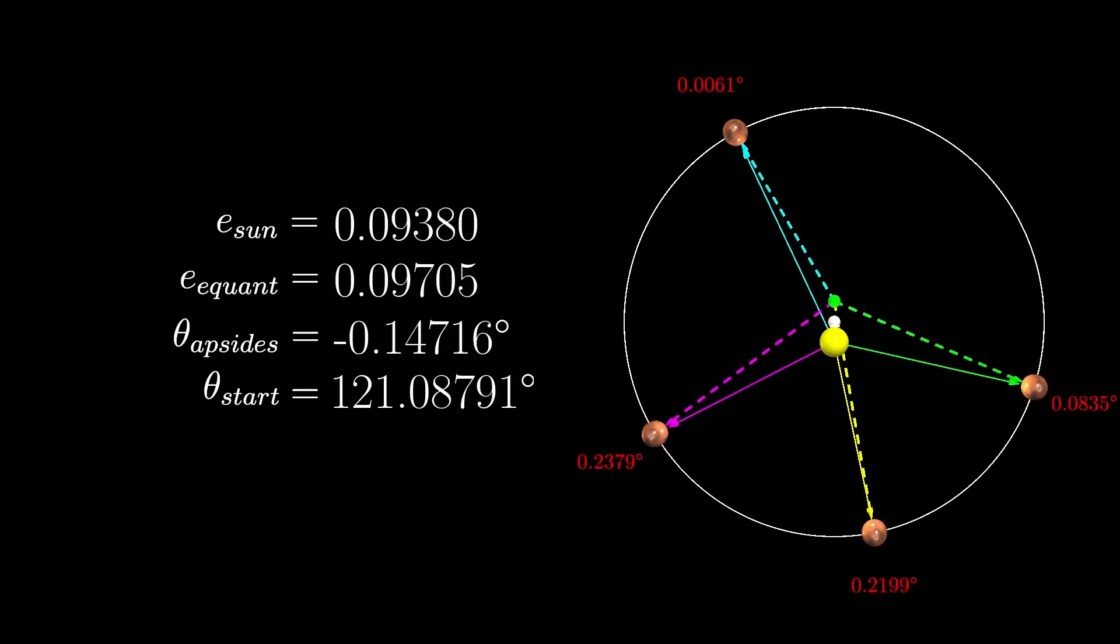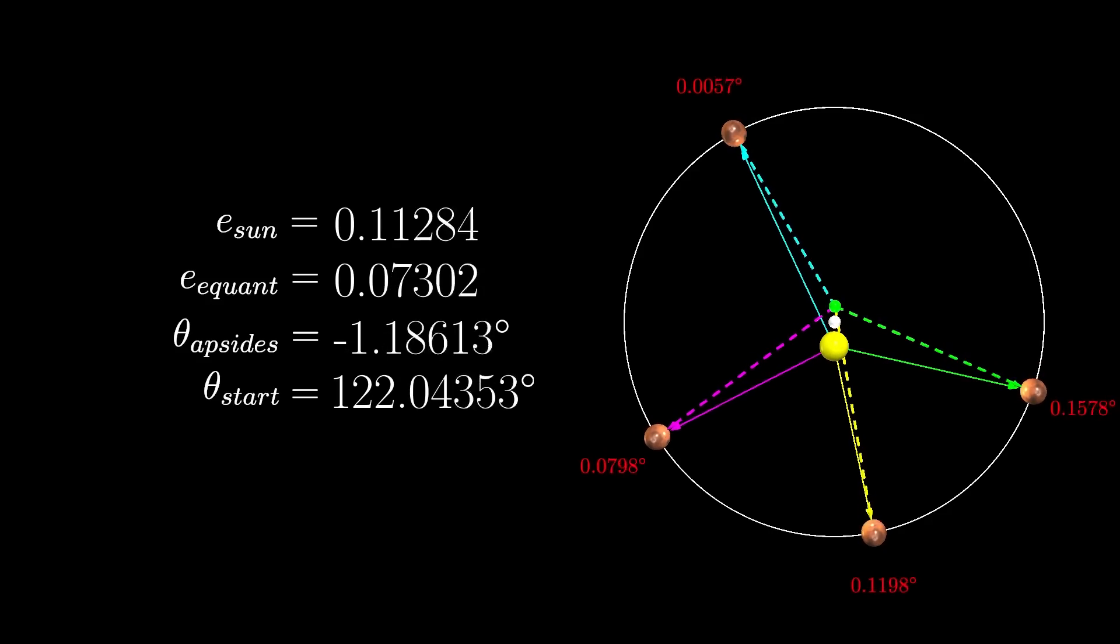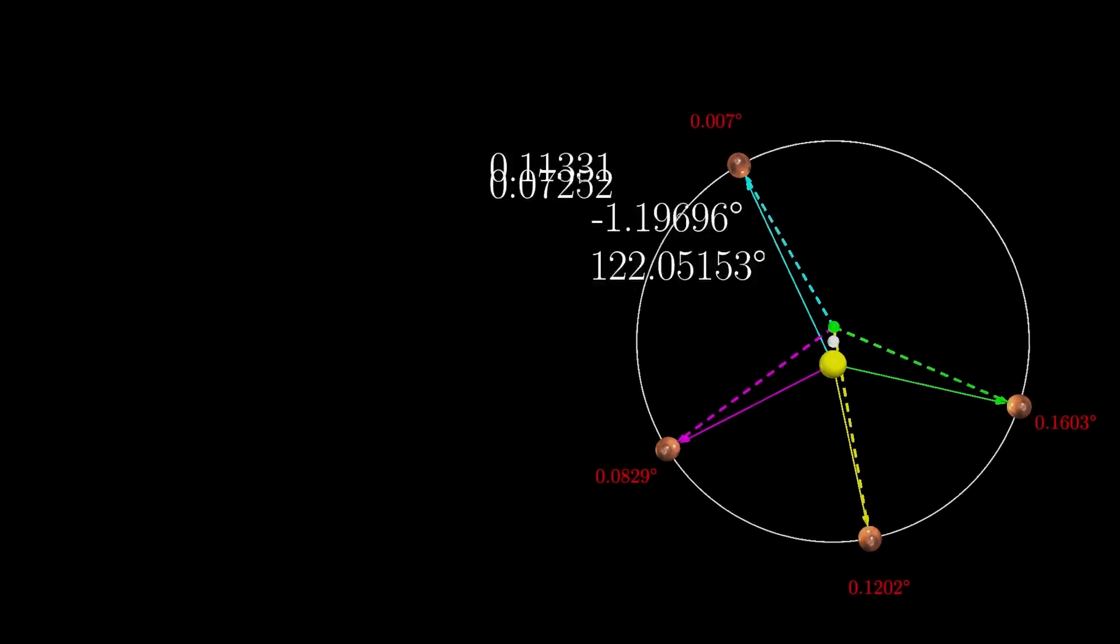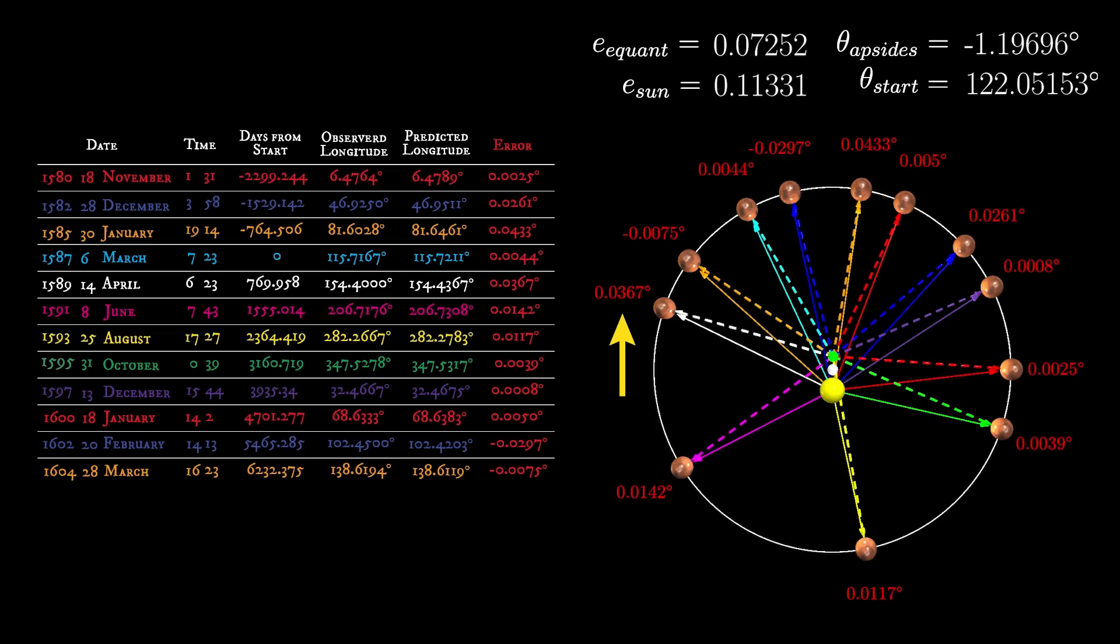Last time, we left off with Kepler's mathematical model for the motion of Mars that erred from observation by only two arc minutes, making Kepler's results nearly a hundred times more accurate than any astronomers before him.